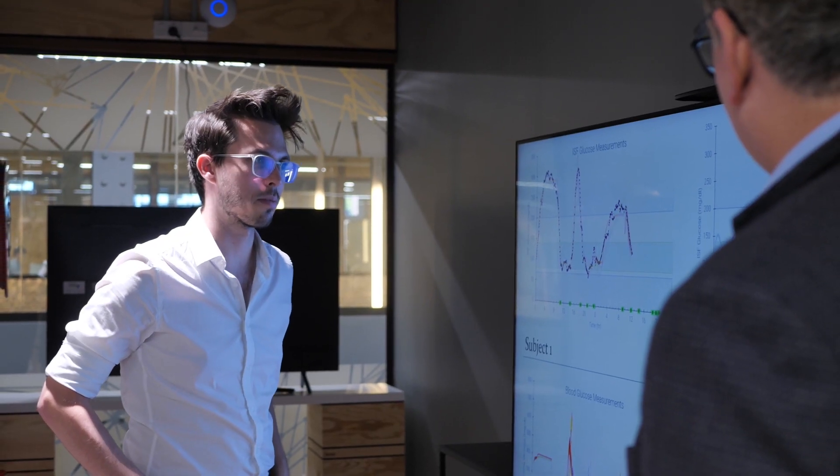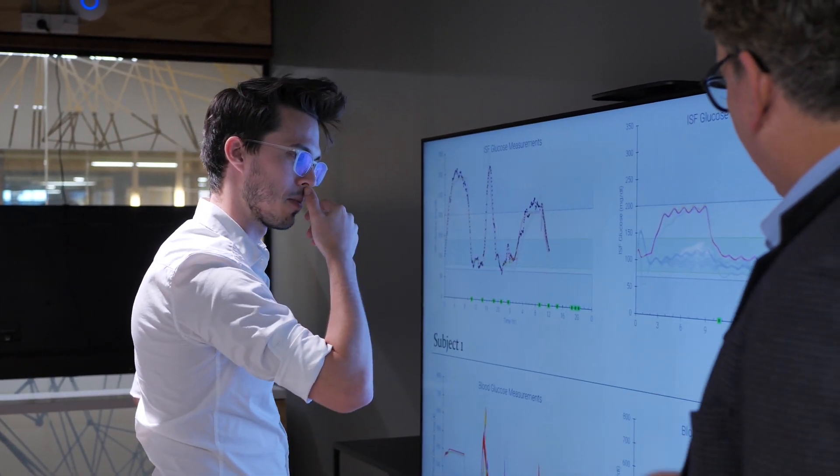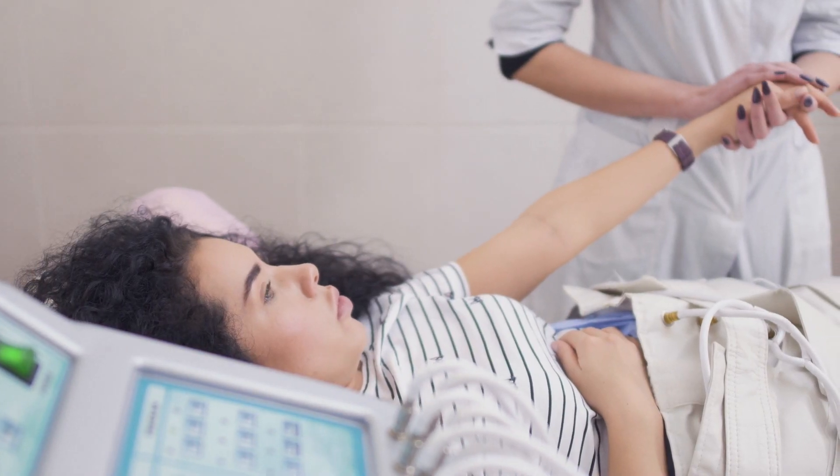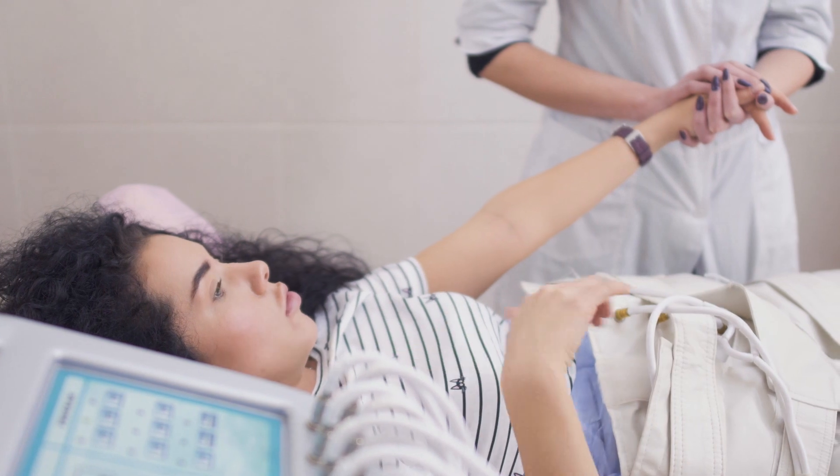We're building the world's first genuinely machine intelligent artificial pancreas appropriate for the people who need it most: people with highly unstable forms of type 1 diabetes who suffer from very high glycemic variability.